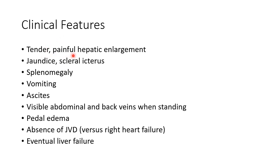The clinical features of Budd-Chiari syndrome include tender hepatomegaly, jaundice and scleral icterus, splenomegaly, vomiting, ascites, visible abdominal and back veins when standing, pedal edema, and absence of jugular venous distension. It is important to remember that jugular venous distension will be present in right heart failure, so its absence can be used to differentiate Budd-Chiari syndrome from right heart failure. Budd-Chiari syndrome will lead to eventual liver failure.